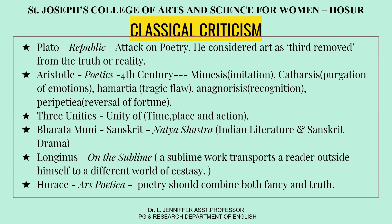Aristotle talks about mimesis, which is imitation; catharsis, which is purgation of emotions; hamartia, the tragic flaw; anagnorisis, recognition; and peripeteia, which is reversal of fortune. He also talks about three unities, where the plot of a story should have unity of time, unity of place, and unity of action.